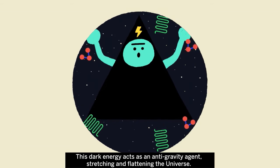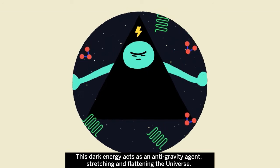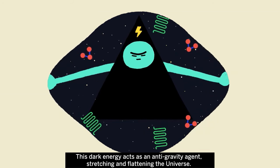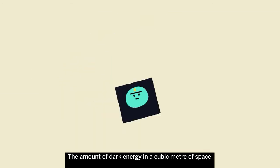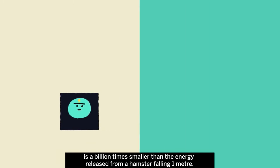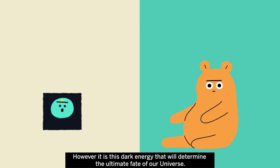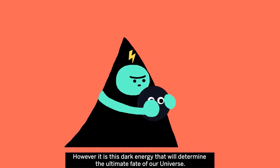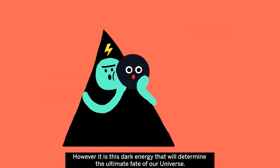This dark energy acts as an anti-gravity agent, stretching and flattening the universe. The amount of dark energy in a cubic metre of space is a billion times smaller than the energy released from a hamster falling one metre. However, it is this dark energy that will determine the ultimate fate of our universe.